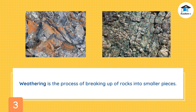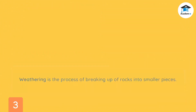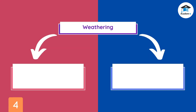The surface of the Earth's crust is constantly changing because rocks break up into smaller pieces in a process called weathering. Weathering can be classified into two general types: physical and chemical.